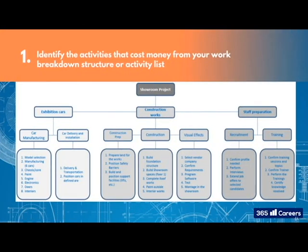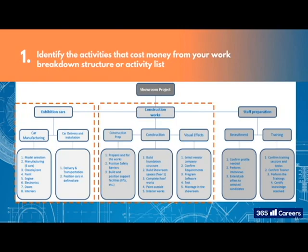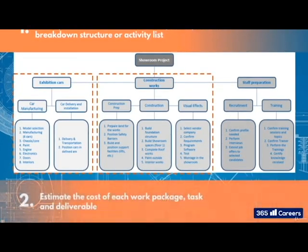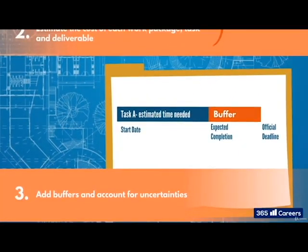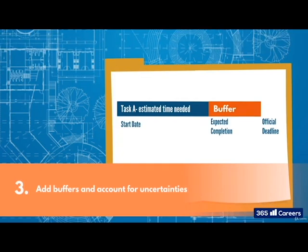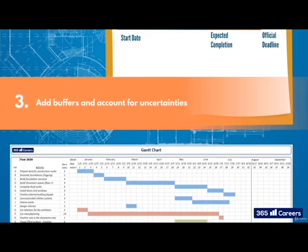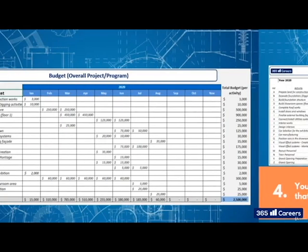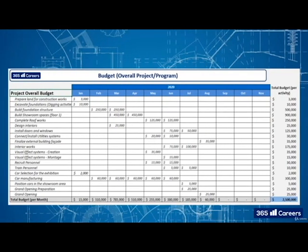First, identify the activities that cost money from your work breakdown structure or activity list. Then estimate the cost of each work package, task and deliverable, and add buffers to account for uncertainties. At that point, you should be ready to time the expenses, which can be done using a Gantt chart. And finally, put it all together into a project budget.